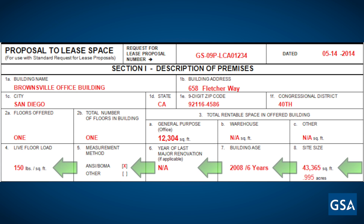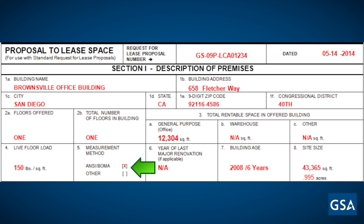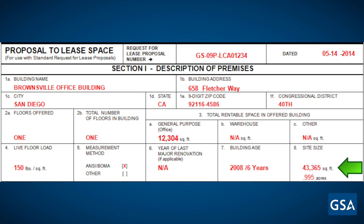Boxes 4 through 8 deal with additional building information. In our example, in Box 4, the floor load is listed at 150 pounds per square foot. In Box 5, the measurement method is ANSI-BOMA. Box 6 was listed as not applicable since no renovations were done to the building. If renovations were completed, this is where you would list the year completed. In Box 7, list the building age either as a numeric age or the year the building was built. In Box 8, fill in the site size.